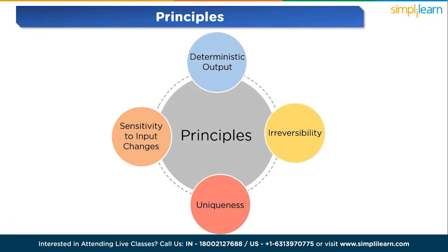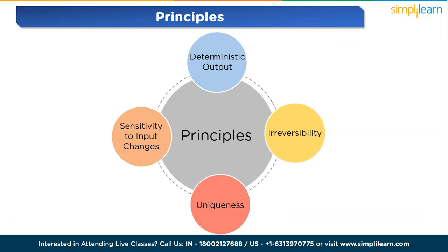Hashing as a general practice adheres to certain principles. Number one is deterministic output: a consistent input should always yield a predictable output, ensuring reliability in hash generation. Next is irreversibility: once hashed, it should be computationally infeasible to reverse the process and retrieve the original input, enhancing security. Then comes uniqueness: distinct inputs must result in distinct hash values, preventing collisions where different inputs produce the same hash. And then comes sensitivity to input changes: even a minor modification in the input should lead to a substantial change in the hash, maintaining the integrity of the hashing process.